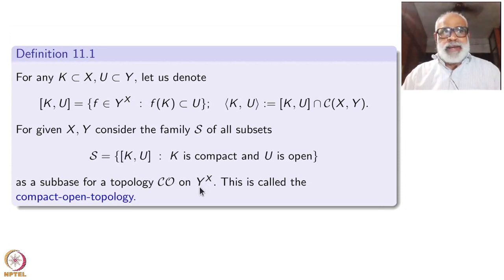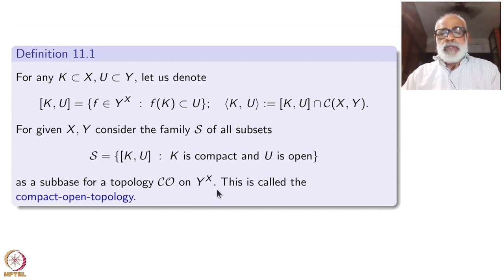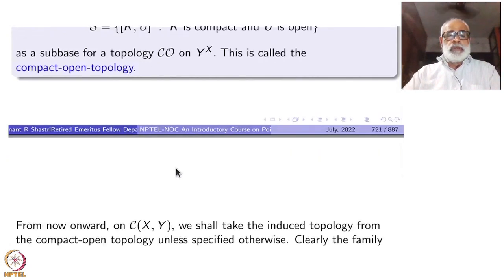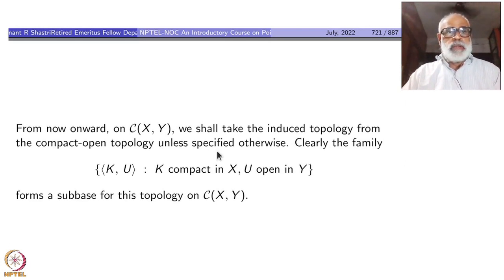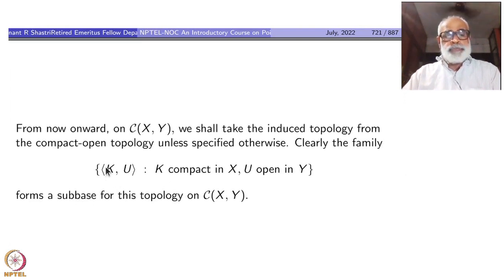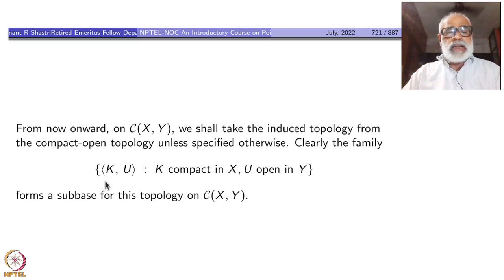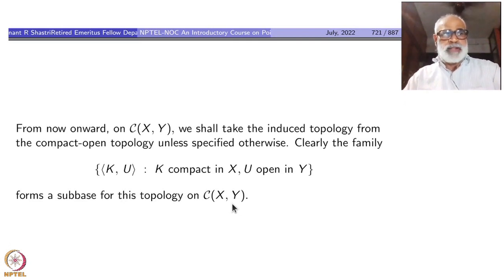We can define this on the entire Y^X using the square bracket — all functions — which will perhaps differ from the product topology. Finally, we come to the subspace C(X, Y). From now onward, on C(X, Y) we take the induced topology from the compact-open topology unless specified otherwise. There are many different topologies on C(X, Y), but right now we take the compact-open topology. The family of round brackets ⟨K, U⟩ — only continuous functions, K compact, U open — forms a sub-base for C(X, Y).